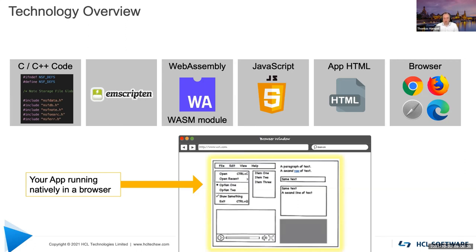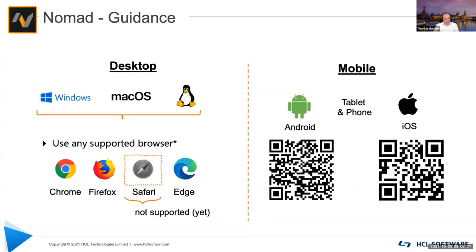This is really interesting for taking the complex applications you have built over the last three decades and bringing them unmodified to a web browser. As guidance, HCL Nomad already exists for smartphones and tablets. If you haven't installed Nomad on your smartphone yet, scan the QR code for your operating system — these QR codes will redirect you to the app store of that platform.